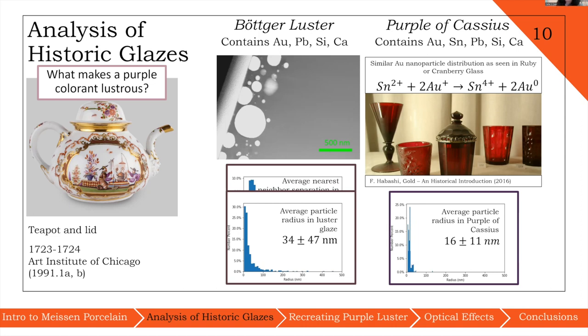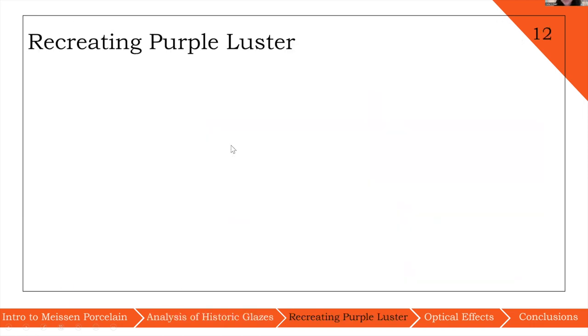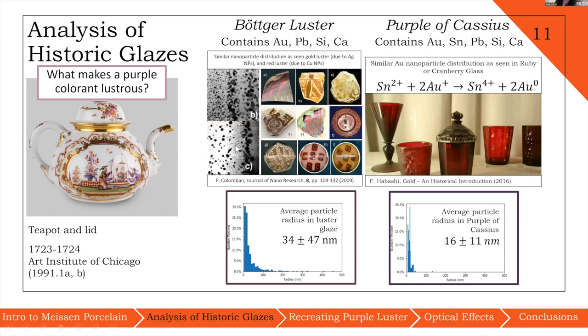In contrast, what we see with Böttger luster is very similar to what we see with other types of lusterware. Here I have some images taken from examples of copper and silver lusterware. If we look at these micrographs, which are also cross-sectioned images taken with transmission electron microscopy, you can see a wide variation in nanoparticle sizes. You can see larger ones here, smaller ones next to it. This is very similar to what we're seeing with Böttger lusterware.